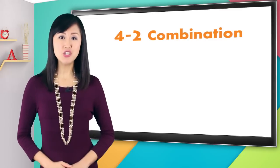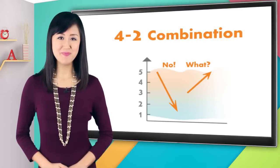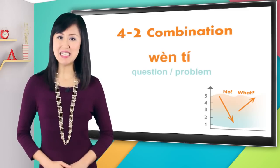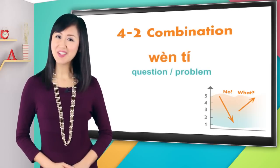Okay, now the four-two combination. That's like saying 'no, what?' The Chinese word for this combo is wàn tí. No, what. Wàn tí. Wàn tí means question or problem. Say it with me: wàn tí, wàn tí. Great.